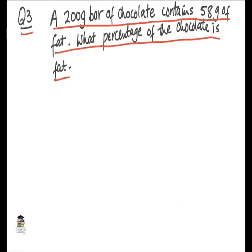Now we have a reasoning question about percentage. The question is: a 200-gram bar of chocolate contains 58 grams of fat. What percentage of the chocolate is fat? We have to calculate the percentage of 58 out of 200. The total weight of the bar is 200 grams, the fat content is 58 grams, and we need to find 58 out of 200 as a percentage. Since percentage is not provided, we multiply by 100: we write 58 over 200 times 100.